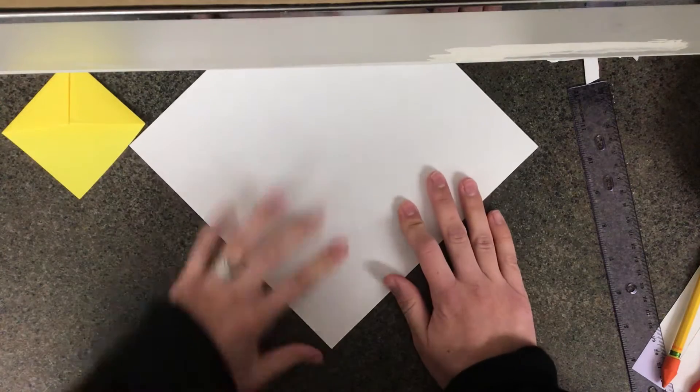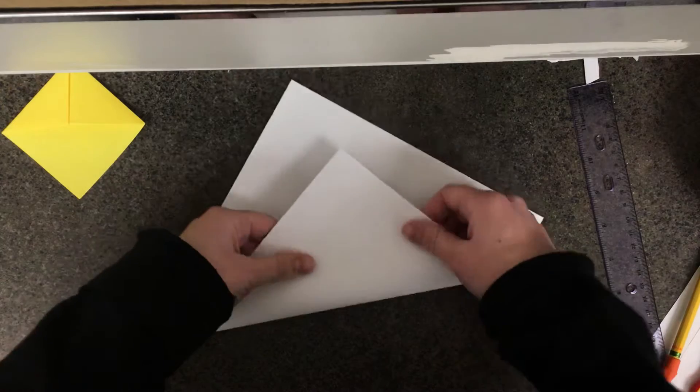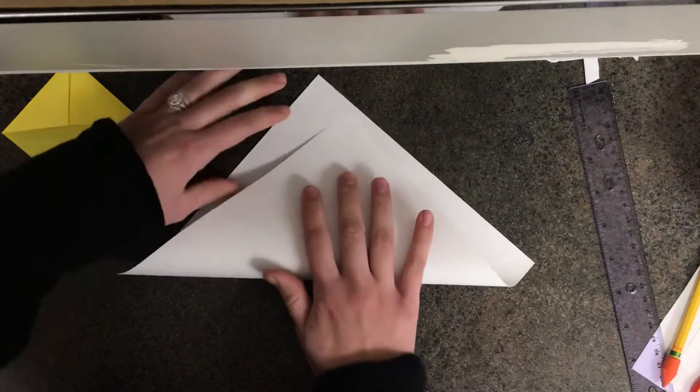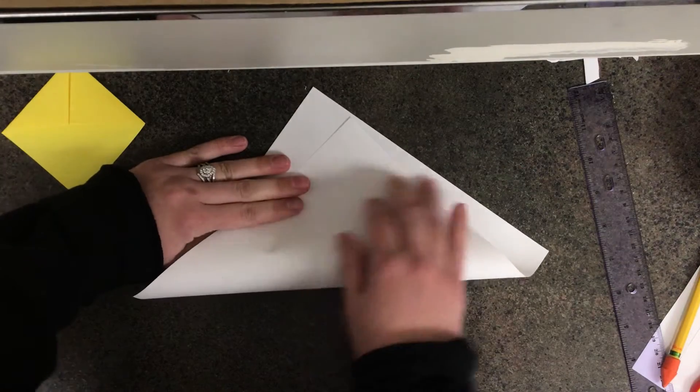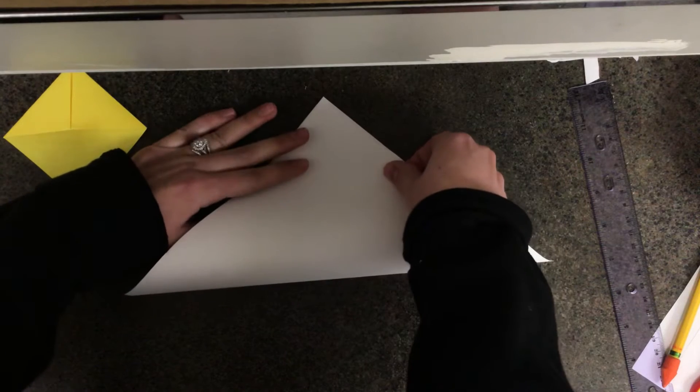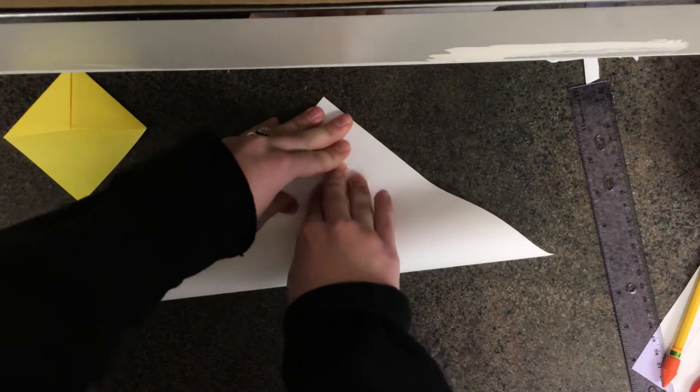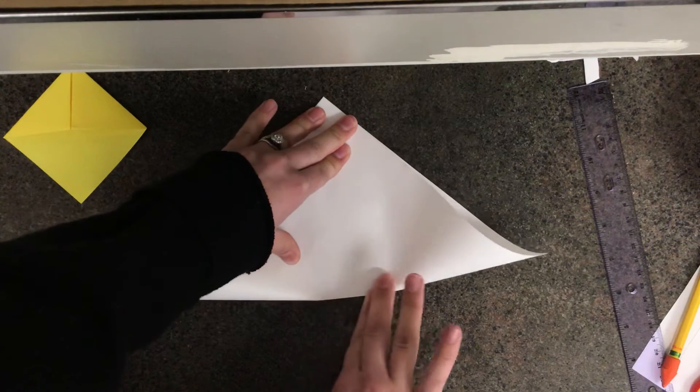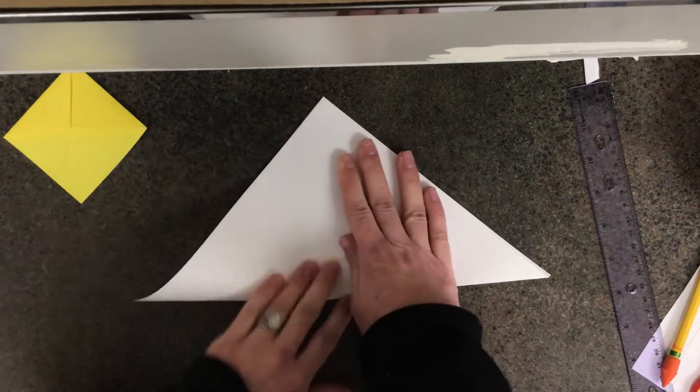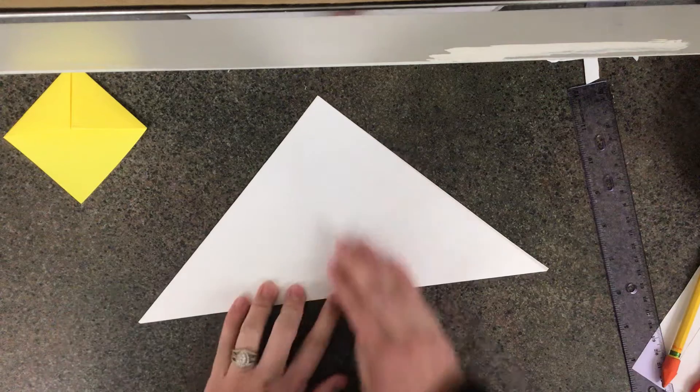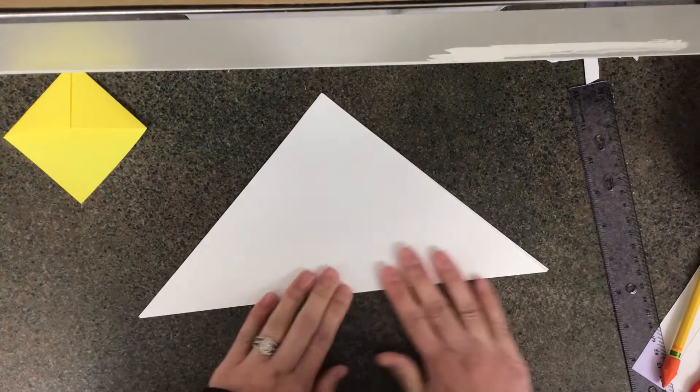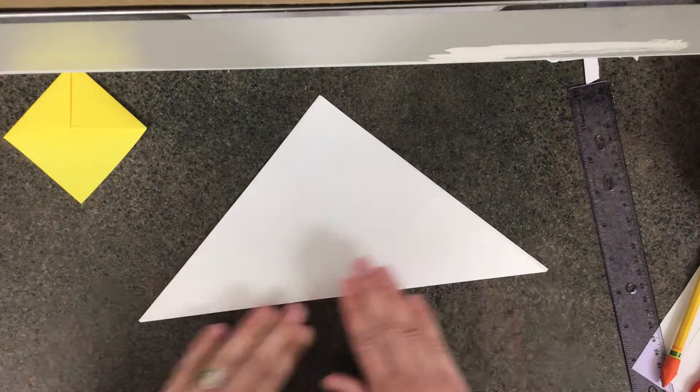We are going to fold the bottom corner up to the top corner. Two really important things about origami: number one, your paper should be lined up really perfect every time, and you need to push down on your creases the best that you can. If you don't push down very well, then it won't work out in the end.